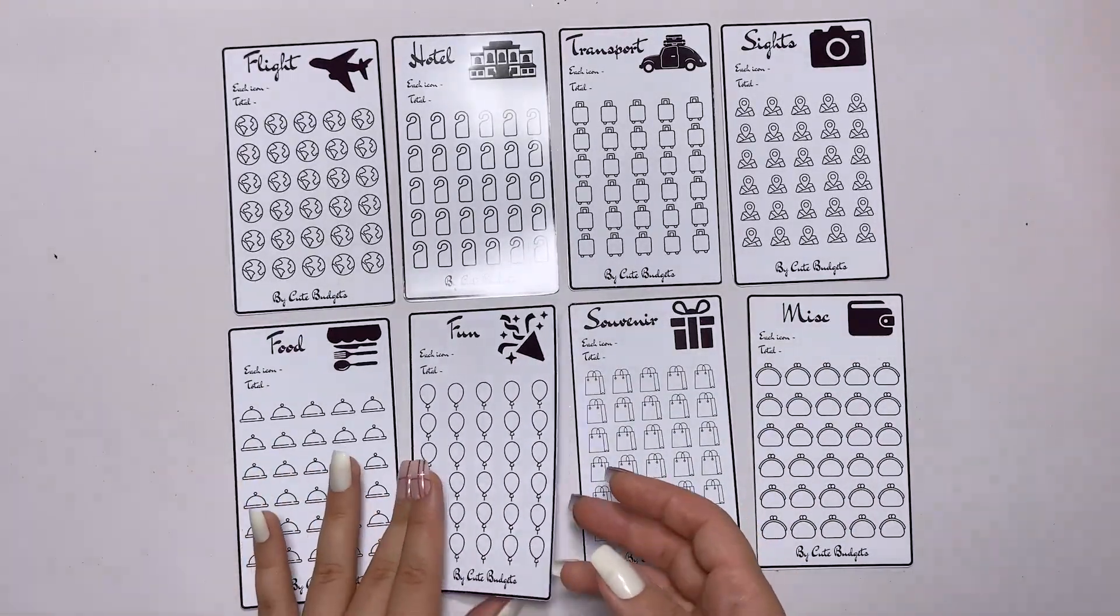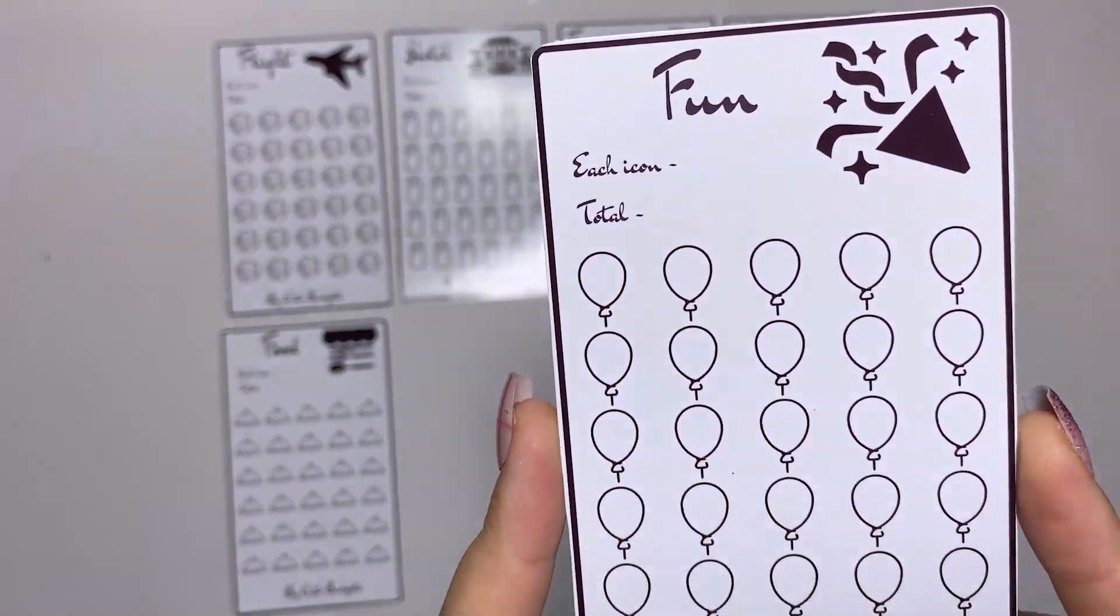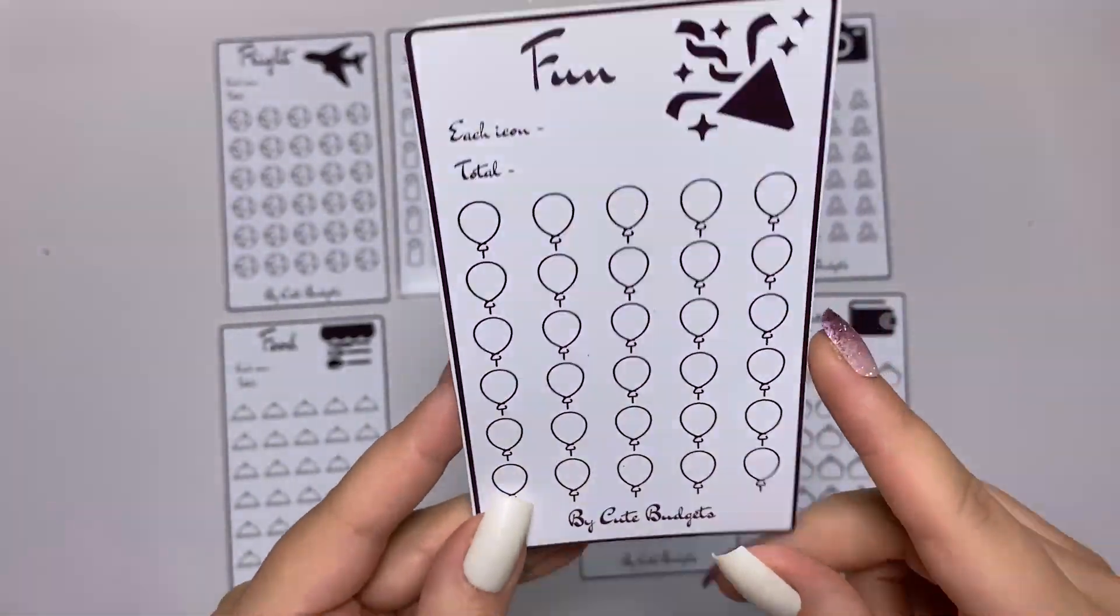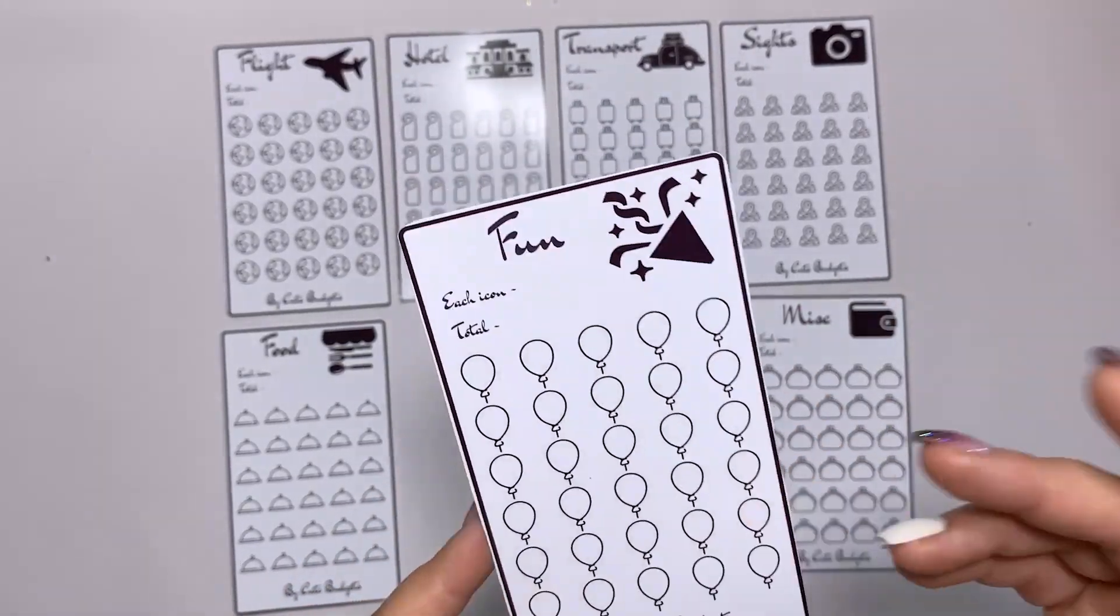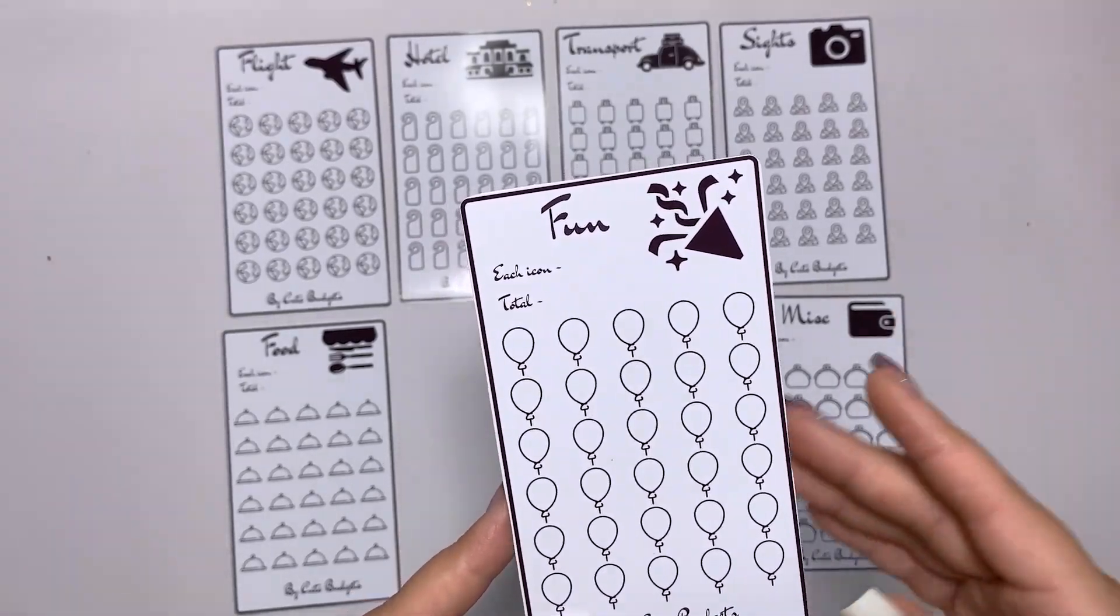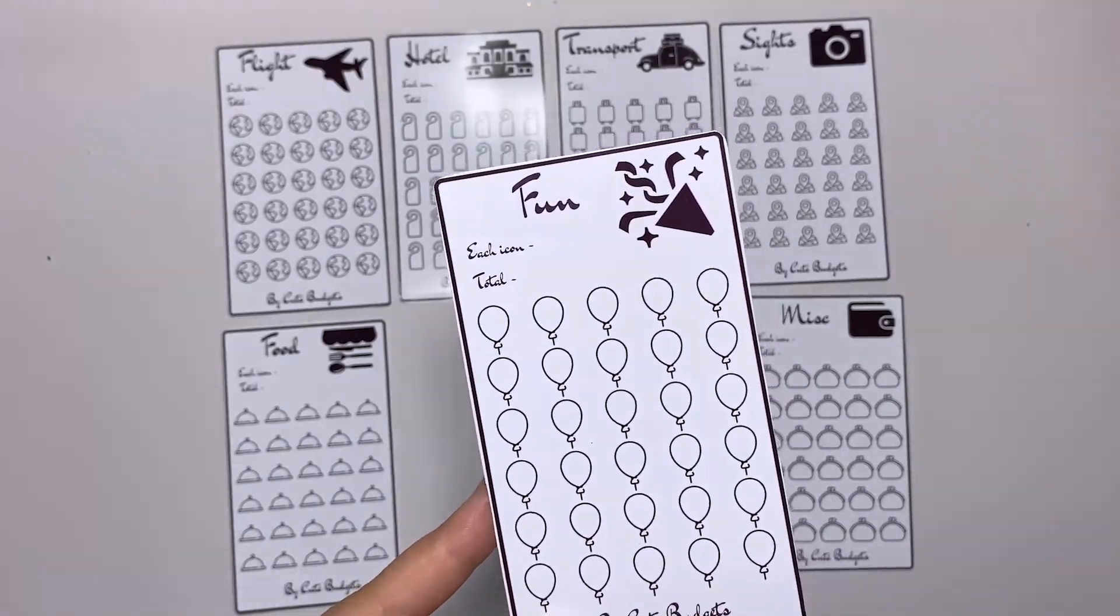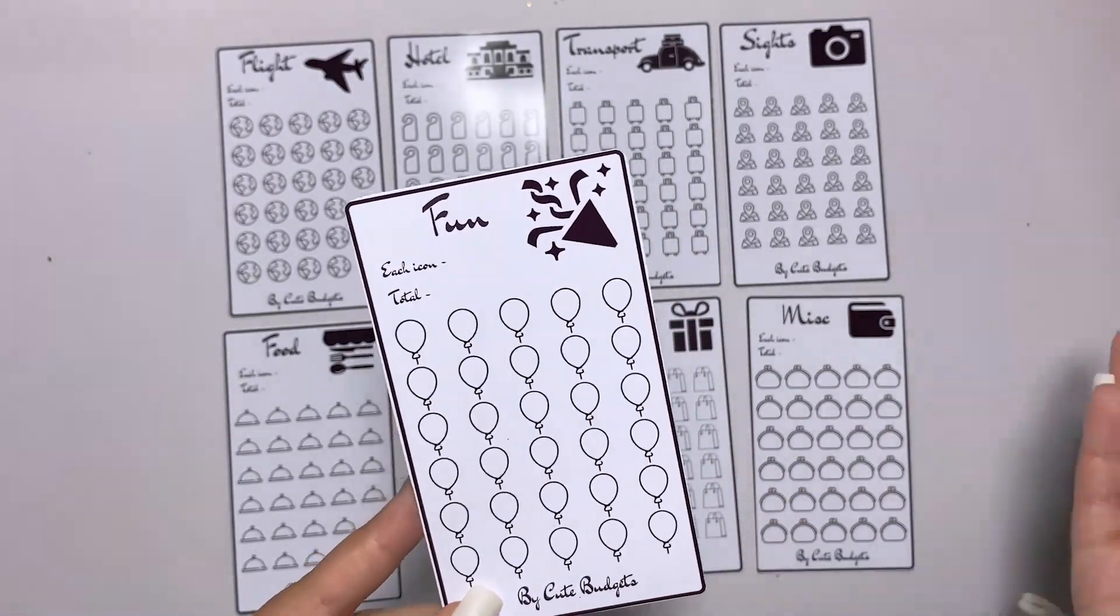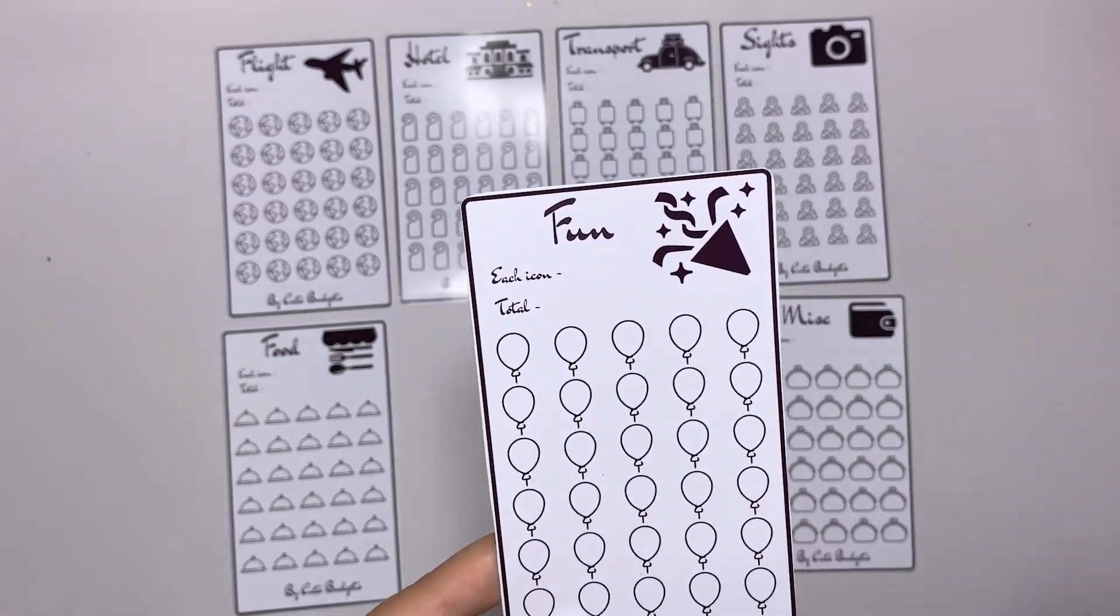Of course then we have fun. Let's see. It has little balloons, again 30 icons. Obviously whenever you go on vacation you want to have fun, so it's very personal what is fun for who and what you like to do. This is for fun, it can be nightlife if you like to go to a club or anything like that, whatever you like to do for fun. This is very personal.